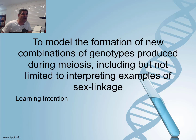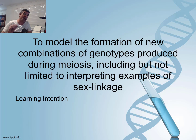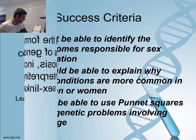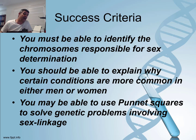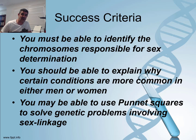In the last couple of videos we were looking at autosomal inheritance, which involved the non-sex chromosomes. This time we're going to look at genes present on the sex chromosomes and how they are inherited. We want to identify the chromosomes responsible for sex determination, explain why certain conditions are more common in men or women, and use Punnett squares to solve genetic problems involving sex linkage.